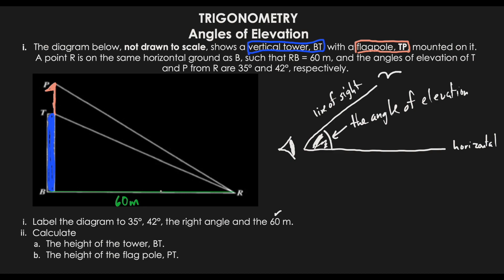So the angle of elevation must always come from the horizontal, which in this case is the line from B to R. The angles of elevation of T and P from R are 35 degrees and 42 degrees respectively. 'Respectively' means we go in order: T is mentioned first, so T matches with 35 degrees, and P goes second matching with 42 degrees. So the angle from R up to T is 35 degrees.